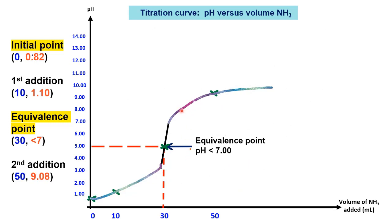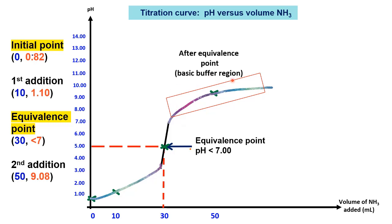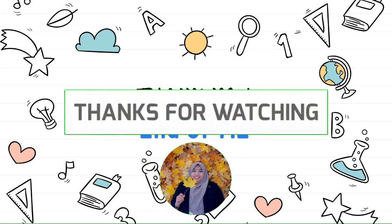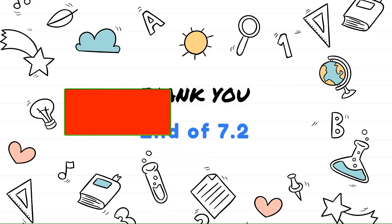Note that after the equivalence point, we have a combination of weak base NH₃ and its conjugate salt, indicating a basic buffer region after the equivalence point. That's all for subtopic 7.2, acid-base titration. Thank you.